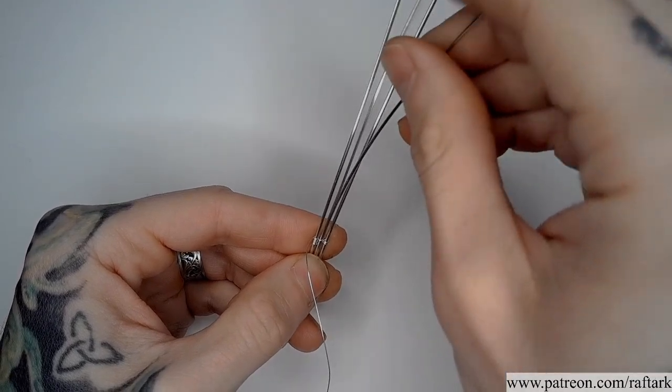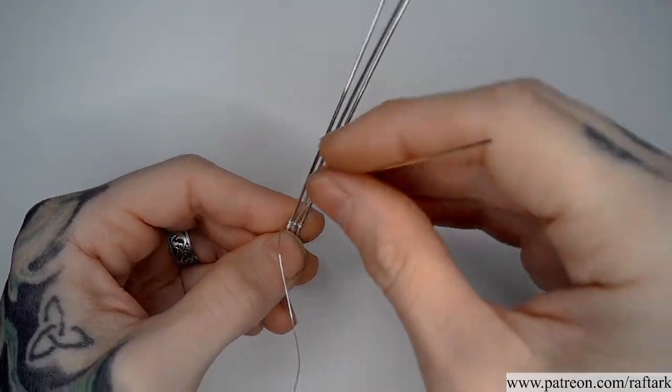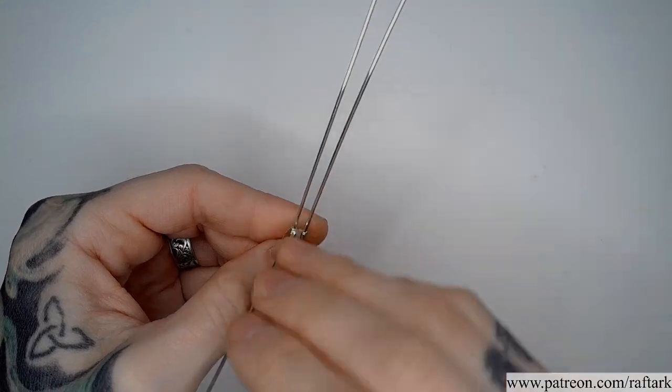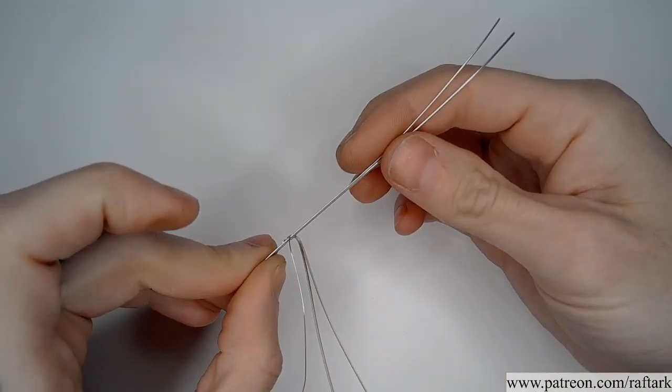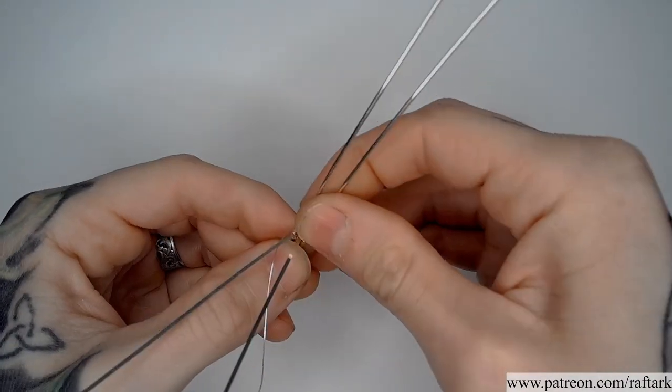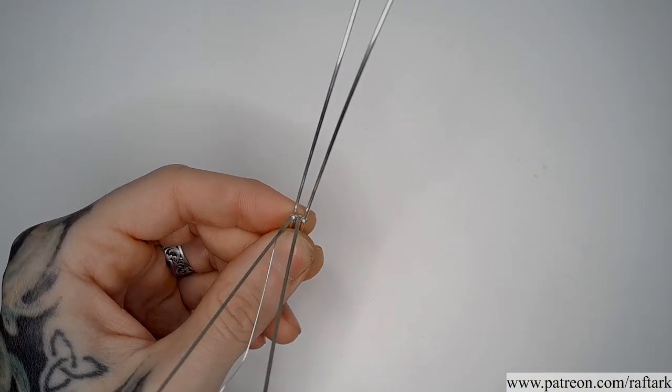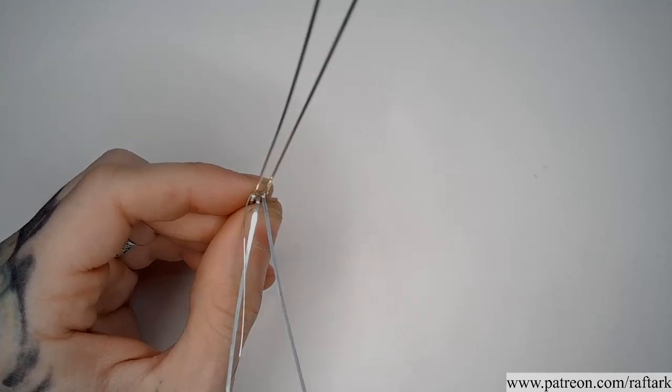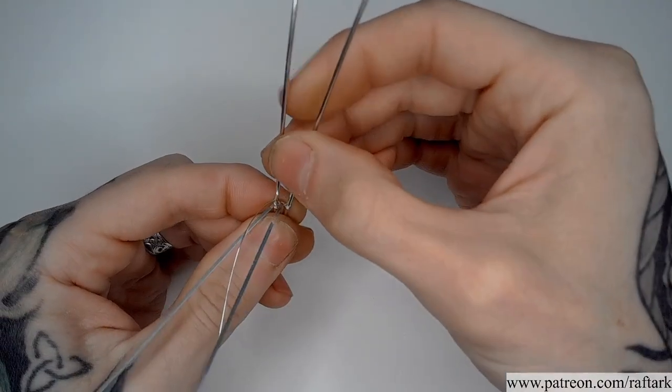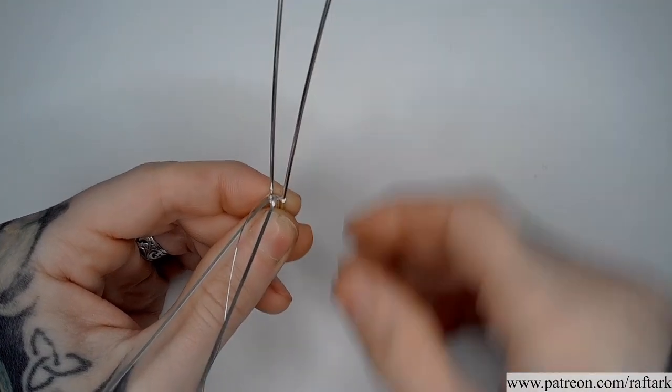Our first step is going to be to take both of our 18 gauge half rounds, and bend them vertically away from the surface of our weave, to give us the space we need to work underneath. Next, we're going to start our two part figure 8 weave, between just the two 16 gauge wires.